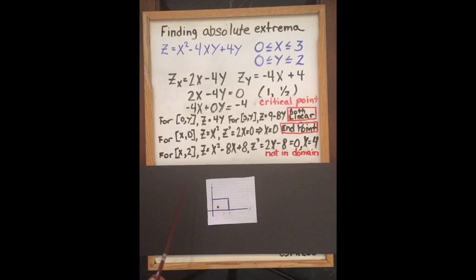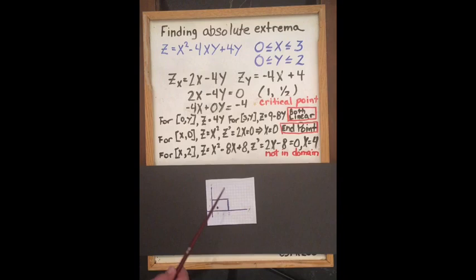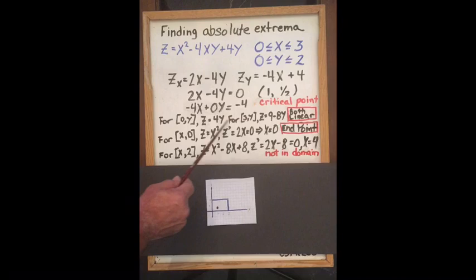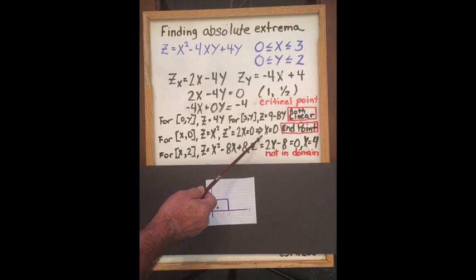Next, we travel across the lines of the domain. When x equals 0 and y is free, we get 4y by substituting 0 for x. When x is 3 and y is free, we get 9 minus 8y. Both of these functions are linear, so the highest and lowest points will occur at the endpoints. When x is free and y is 0, the derivative of x squared is 2x, which means x is 0, one of the endpoints of our domain.